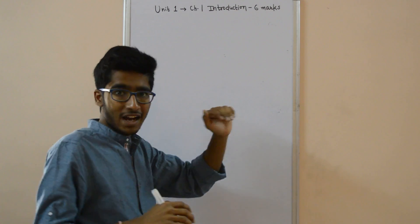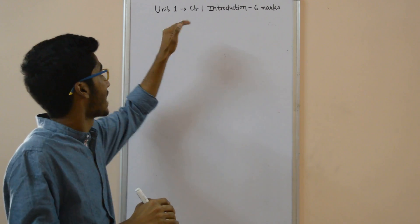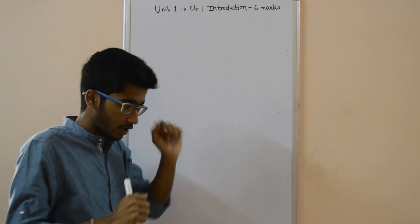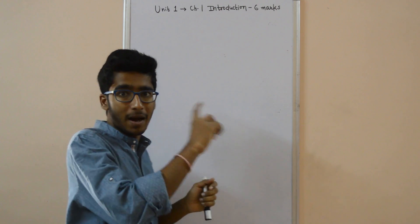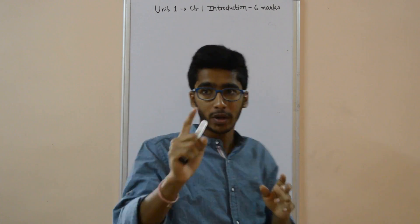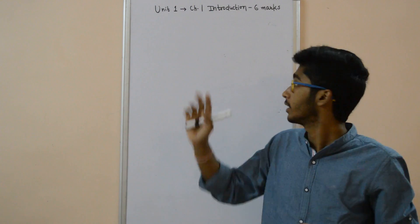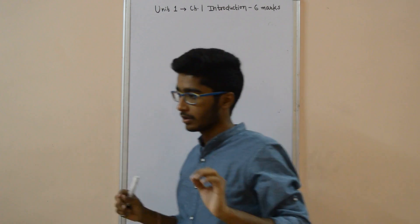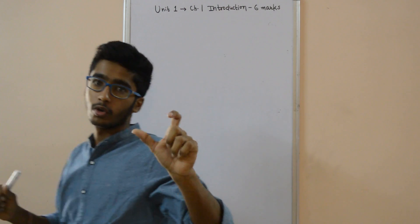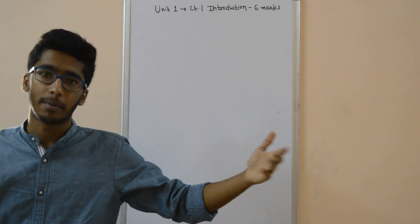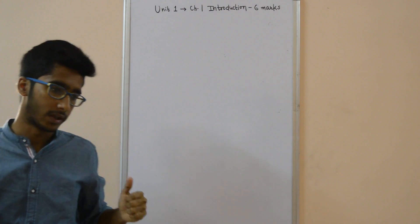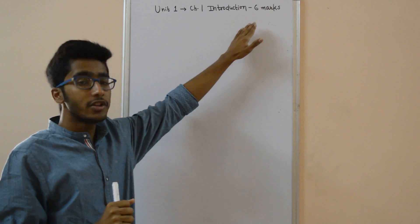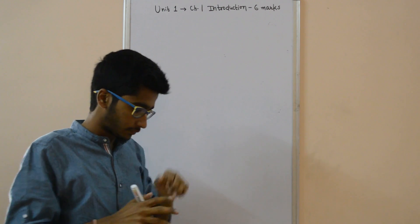We are going to start with Chapter 1 of Microeconomics, which is Unit 1. Unit 1 has one chapter. Its name is Introduction. This is the basic and first chapter of Microeconomics. It carries 6 marks.